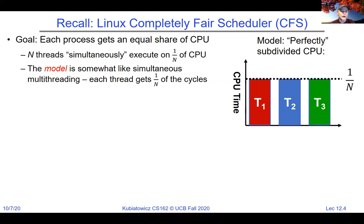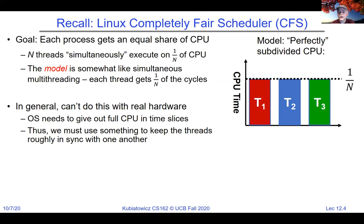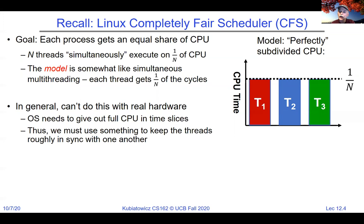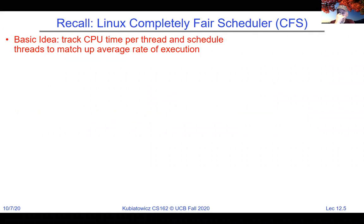Of course, in general you can't actually subdivide cycles — hyper-threading maybe lets you do it with one or two threads, but certainly not a large n. So we need to figure out how to approximate every thread getting one over n of the CPU without really subdividing those cycles. The OS gives out full-speed cycles, so we track CPU time per thread and schedule threads to match up an average rate of execution.